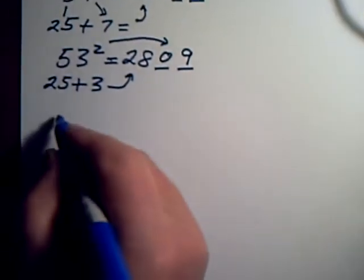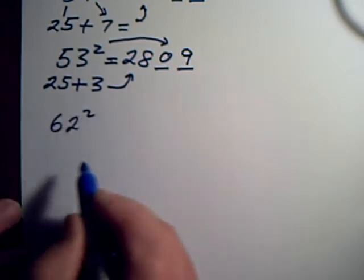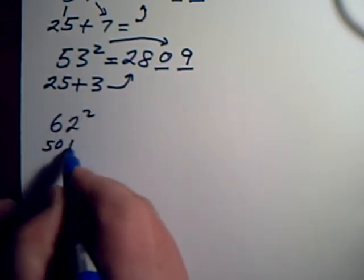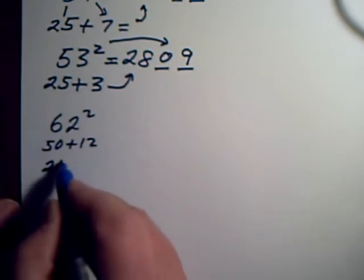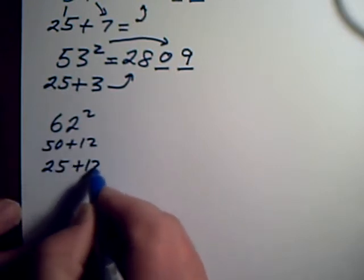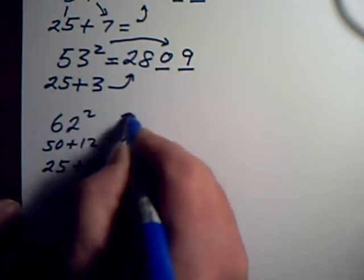So for instance, if I had something like 62 squared, that's 50 plus 12. So for the 50 I'm going to write 25, and then I'm going to add on 12. That gives me 37.